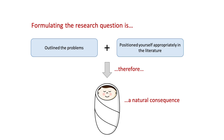Formulate very clearly what exact questions you are looking to answer through your research. This links back to the previous section on the literature review. If you have outlined the problems and positioned yourself appropriately in the literature, then the research question is a natural consequence of that. As a point of reference, there should be one big question that you are addressing, and many sub-questions that feed into that one big question.